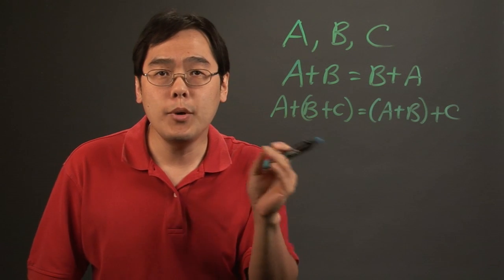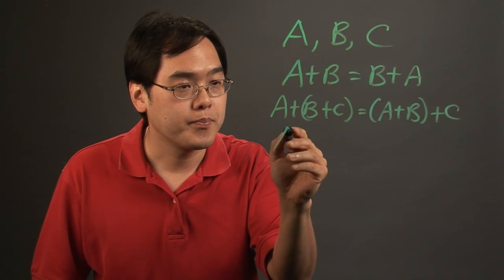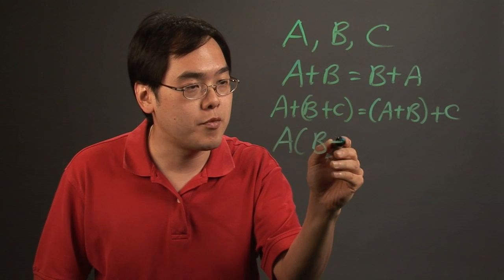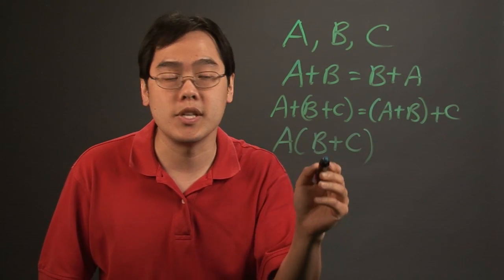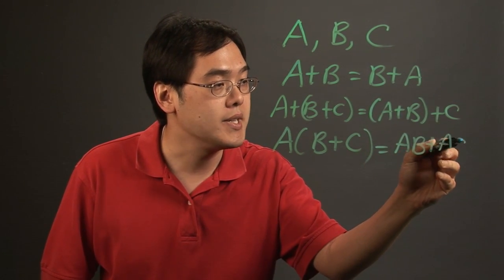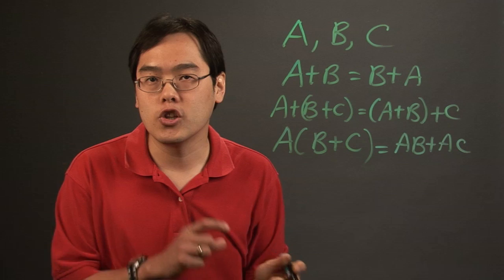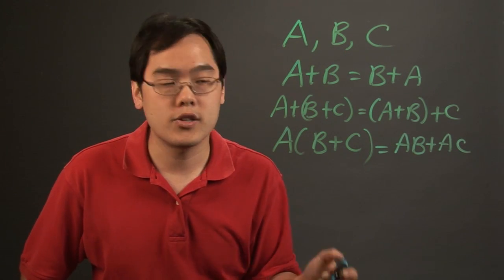Now, multiplication is a little bit different, but let's look at the distributive property. When you have matrix A times matrices B plus C added together, that's actually going to be AB plus AC. Matrix multiplication is a little more delicate, so let's move on to other laws.